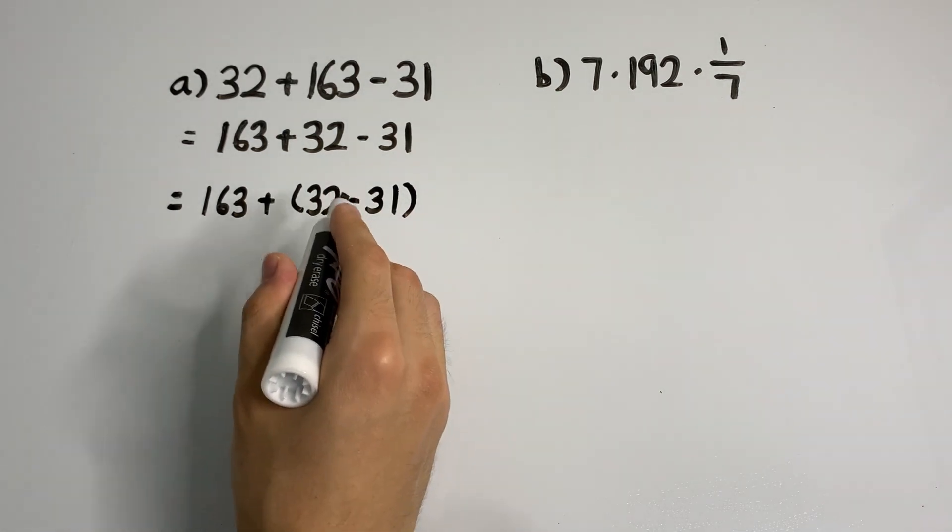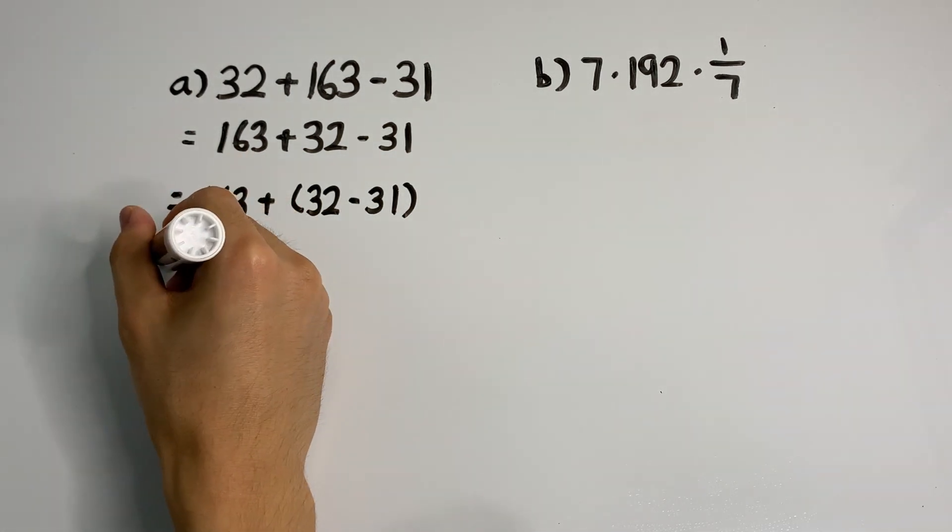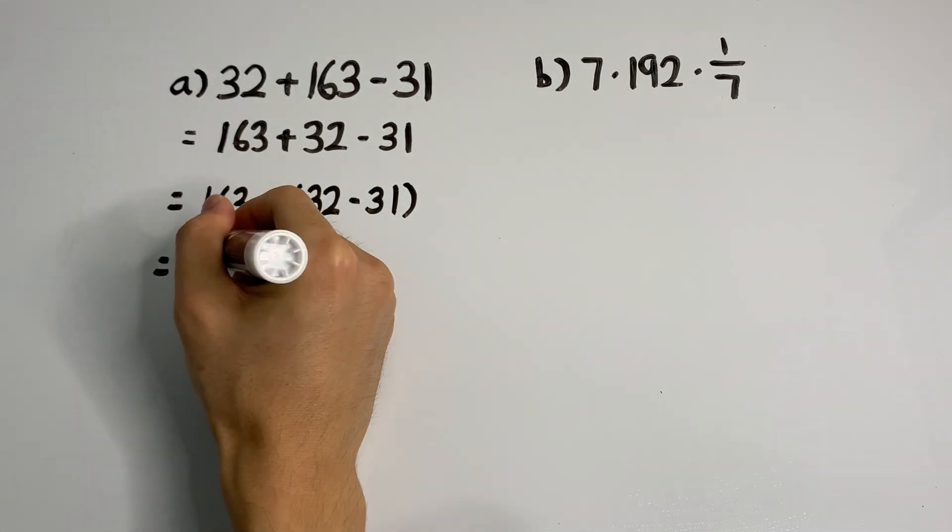And this is easy. That is just 1. We can do it in our heads. So what we're really doing is we're just adding 1 to 163, and that is 164.